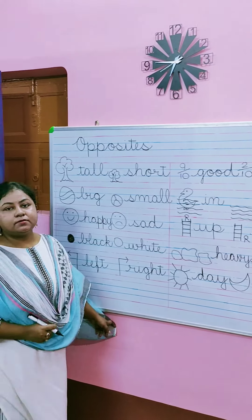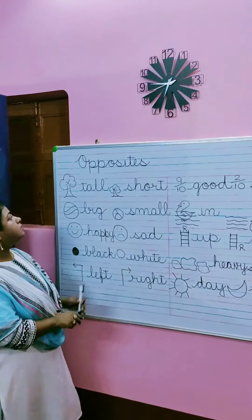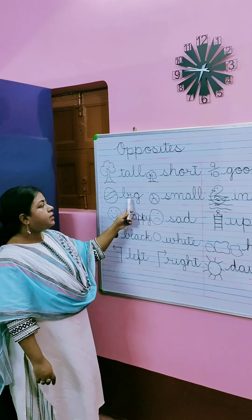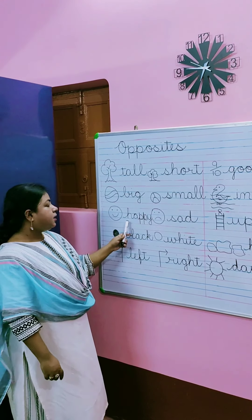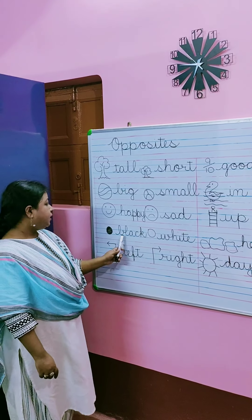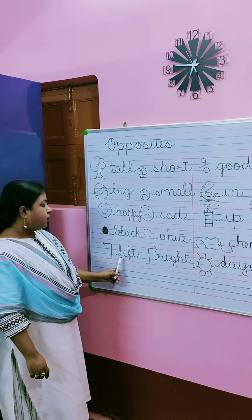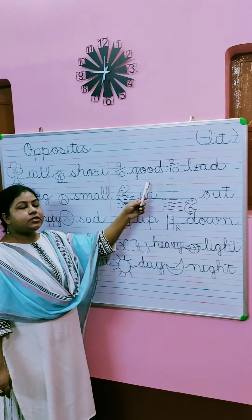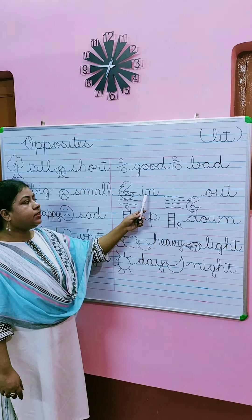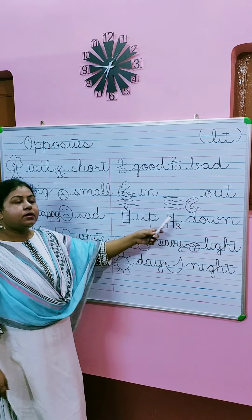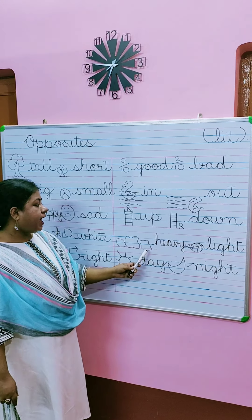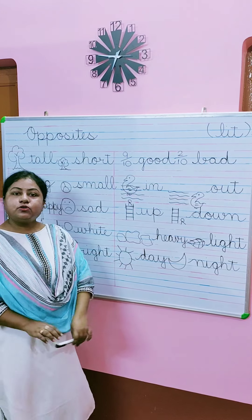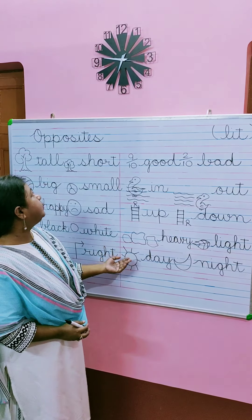Let's read. Opposites: tall, short, big, small, happy, sad, black, white, left, right, good, bad, in, out, up, down, heavy, light, day, night. So these are a few examples of opposites.